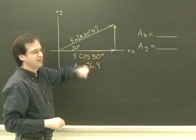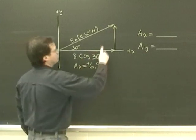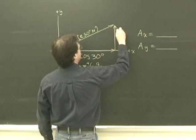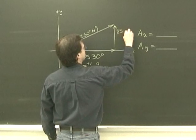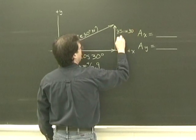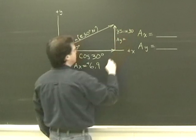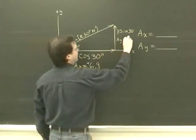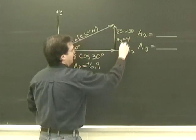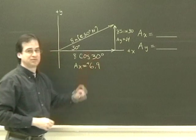My y side is the sine side. So what I remember is it's going to be 8 sine 30. So Ay is going to be 8 sine 30, which is 4, and it's up, so it's positive.